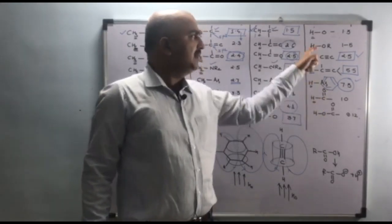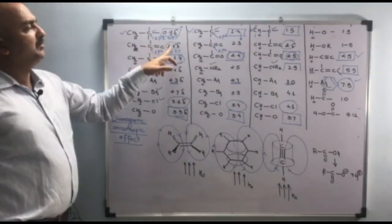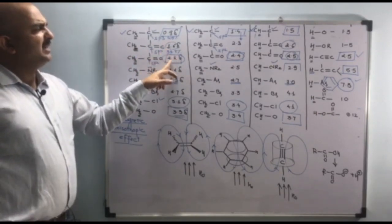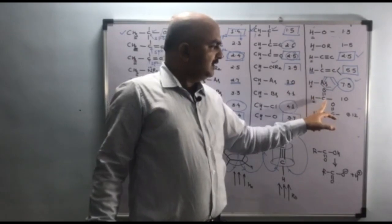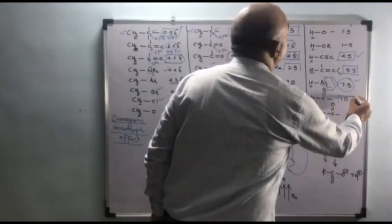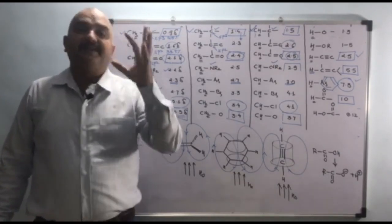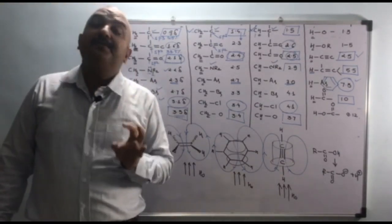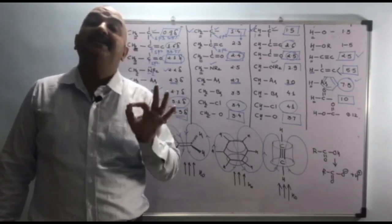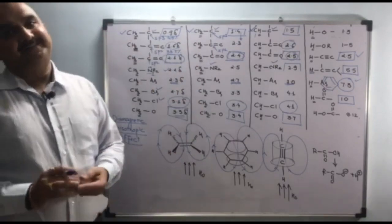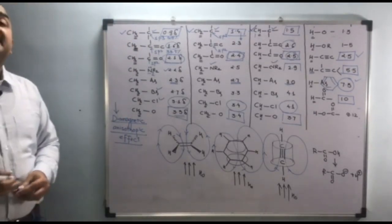The next most important abnormality is the aldehyde proton. We have seen that CH3 attached to a C=C double bond is 1.6 delta, and CH3 attached to a C=O double bond is 2.1 delta — a difference of only 0.4. But when hydrogen is directly on a C=O double bond (aldehyde), it appears at 10 delta, which is another major abnormality. So the four key questions are: why are acetylenic protons shielded, why are allylic protons deshielded, why are aromatic protons deshielded, and why are aldehyde protons deshielded? These can all be explained by the diamagnetic anisotropic effect.